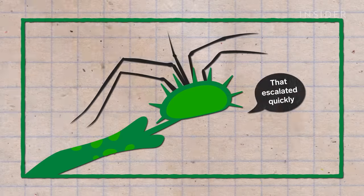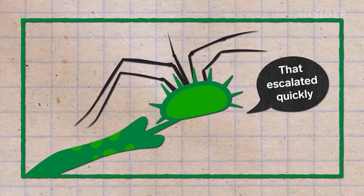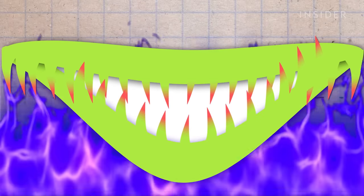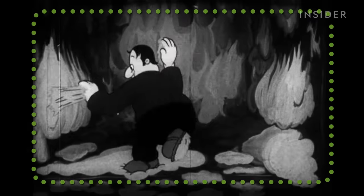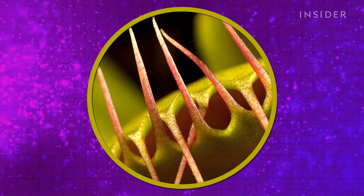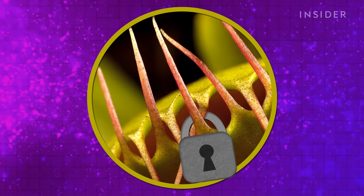Now, of course, the spider isn't happy with this turn of events. So it tries to escape, which is exactly what the plant wants. The more the spider struggles, the more it knocks into the trigger hairs, the tighter the trap closes. And after an hour or two, the trap locks completely.